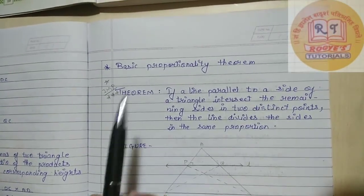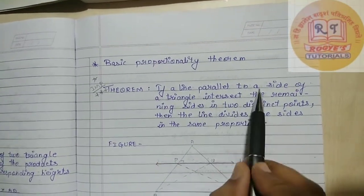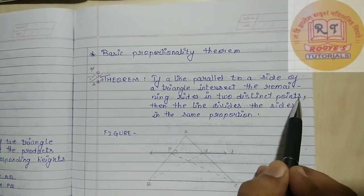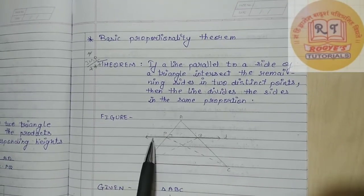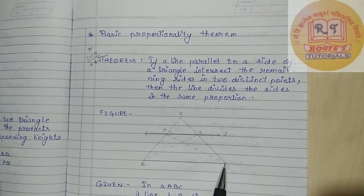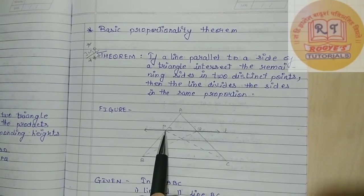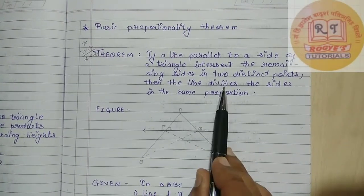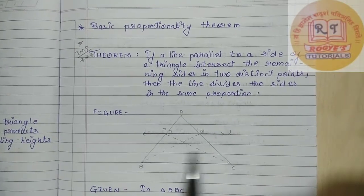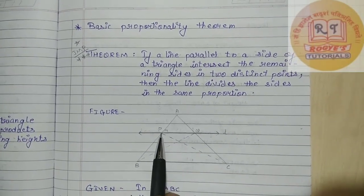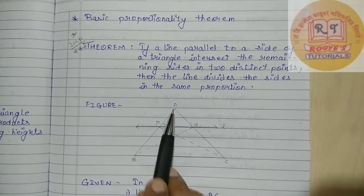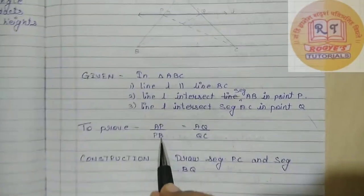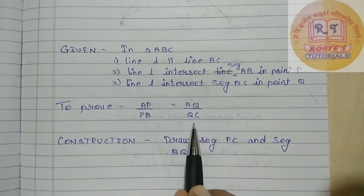Basic Proportionality Theorem. The statement is: if a line parallel to a side of a triangle intersects the remaining sides in two distinct points, then the line divides the sides in the same proportion. So this is a triangle, and line L is parallel to side BC. It intersects side AB at point P and side AC at point Q. So to prove: AP upon PB is equal to AQ upon QC.